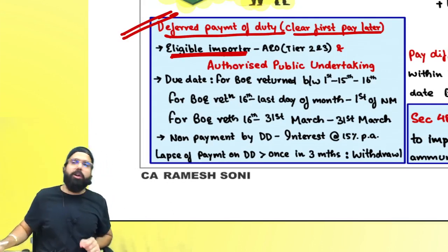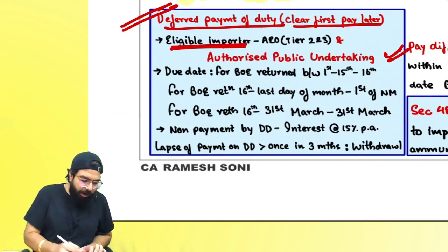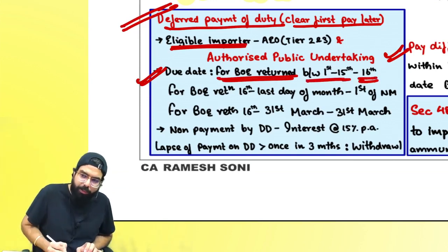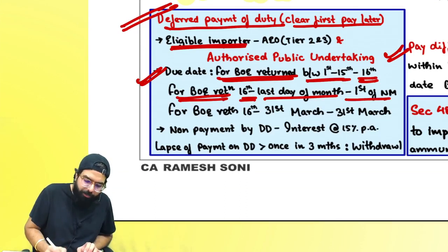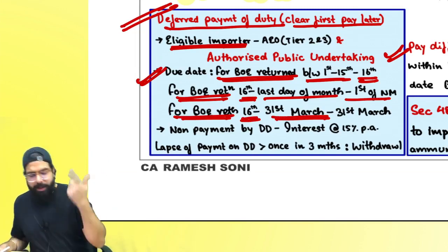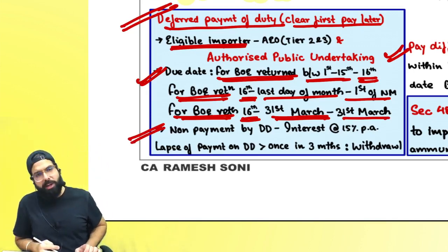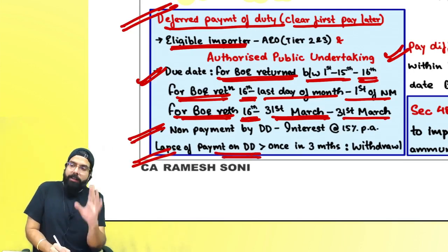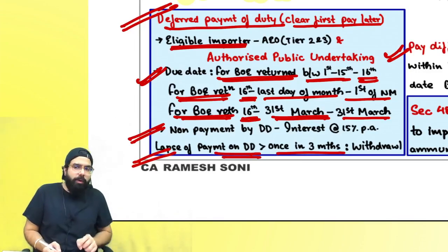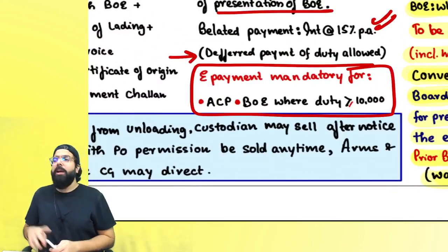For deferred payment, authorized economic operators (Tier 2 and Tier 3) and authorized public undertakings are eligible. The due date for payment: bill of entries returned between 1st to 15th — due date is 16th; returned between 16th to last day of month — due date is 1st of next month; returned between 16th to 31st March — due date is 31st March. Non-payment by due date attracts 15% interest. Defaulting more than once in 3 months leads to withdrawal of the deferred payment facility. E-payment is mandatory for accredited client program members and when duty is ₹10,000 or more.